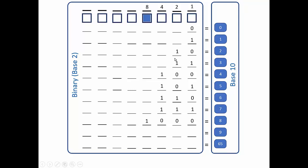For 9, I need my 8 and what else? 8 plus 1. So the 8 is on, the 4 is off, the 2 is off, and the 1 is on. 8 plus 1 gives me 9. So 1 0 0 1 in binary is equivalent to 9.